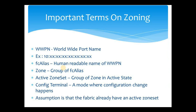First, let's discuss some important terms on zoning. The first one is WWPN — Worldwide Port Name — which is the unique address assigned to any physical FC port in a SAN network. Next is FC alias, which is a human-readable name for a WWPN. Since WWPN is very hard to remember, we give it an alias name. In Cisco, we call it FC alias. A zone is basically a group of aliases, which can be FC aliases of host WWPN and storage array port WWPN.